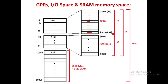Looking at the addresses: address 0 to 31 gives 32 locations for GPR. Then 32 to 95 gives 64 bytes for IO space. Then from hexadecimal 0x60 it goes up to 0x85F, which is 2,048 locations in hexadecimal — that accounts for the 2 KB of SRAM.